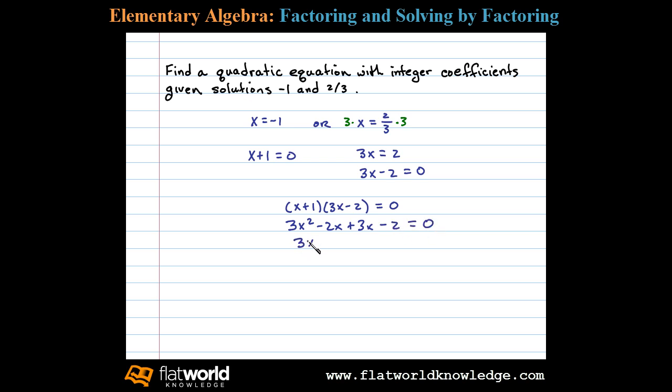Combining like terms, -2x + 3x is +x, so we have 3x² + x - 2 = 0. This is a quadratic equation with solutions -1 and 2/3.